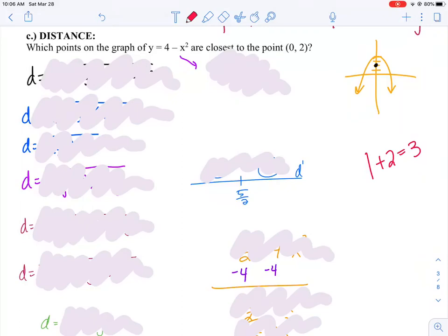Okay, here is example number 1c from 4-7, Optimization Problems. It asks us to find which points on the graph of y equals 4 minus x squared are closest to the point (0, 2).